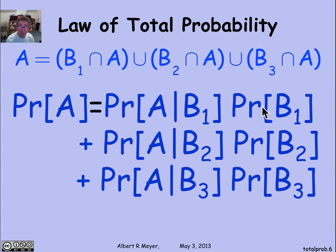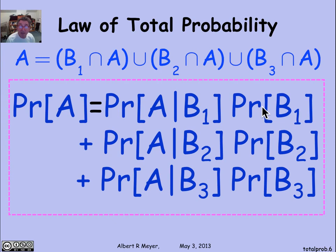And if I do that with the rest of them, I now have the law of total probability stated in the usual way in terms of conditional probabilities where it's most useful.